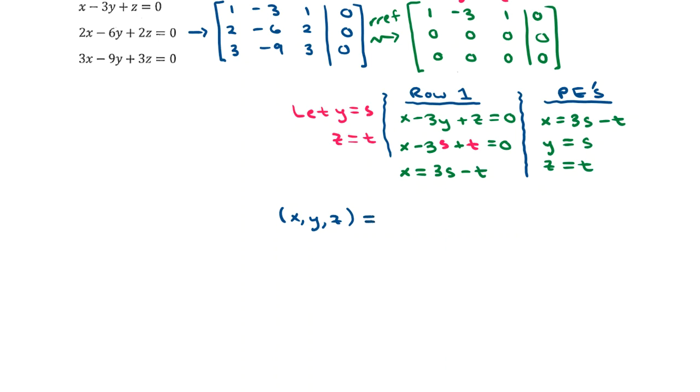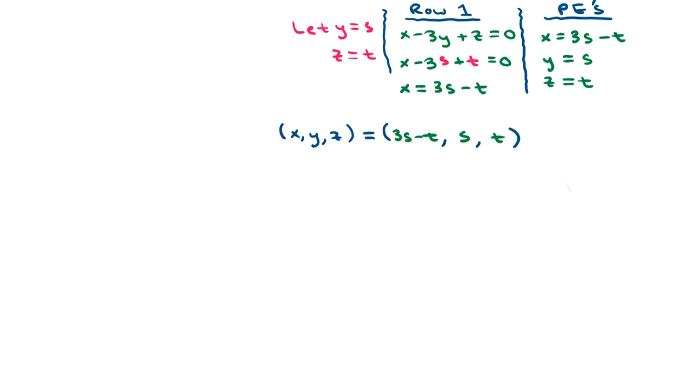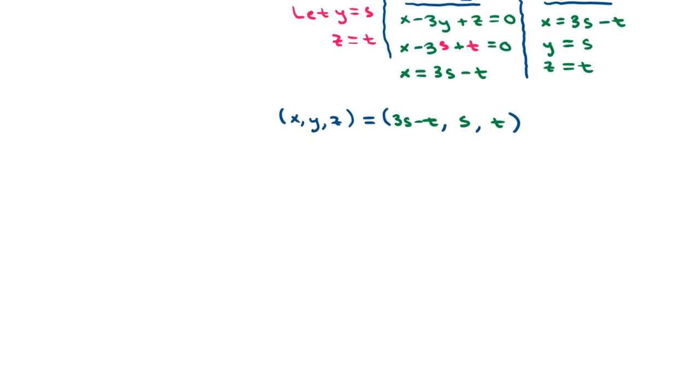Well, the trick is to write the parametric equations as like an ordered triple. Here's what I mean. Let this generic order triple x comma y comma z represent any solution to the homogeneous linear system here. We have actually some specific expressions for each of these three variables. Namely, x is 3s minus t. y is s. And then z is t. And I'm going to do some fancy vector work next. I'm actually going to break the vector expression on the right of the equation here as a sum of two vectors. One vector is just going to involve the parameter s, and the second vector is just going to involve the parameter t.